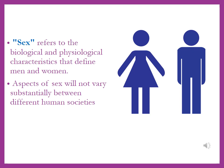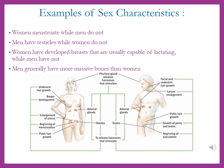Sex refers to the biological and physiological characteristics that define men and women. In other words, male and female are sex categories. If you look at various human societies both today and throughout history, aspects of sex are not going to vary substantially between different societies. Some examples of sex characteristics would be that women menstruate and men don't, that men have testicles and women do not, that women have developed breasts and are usually capable of lactating, that men typically do not, and that men generally have more massive bones than women, as there is a form of sexual dimorphism in humans where men are typically about 25% larger than most women.